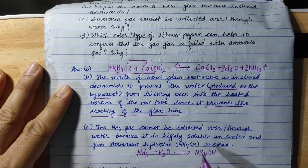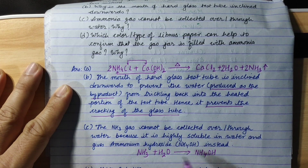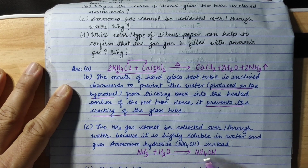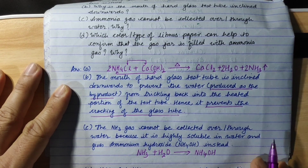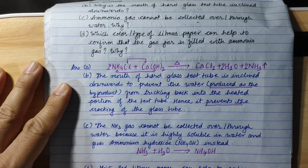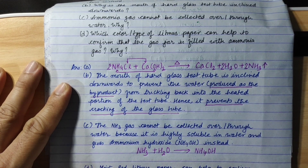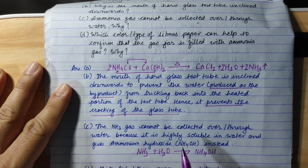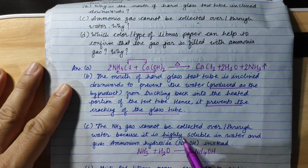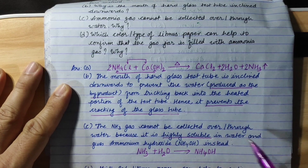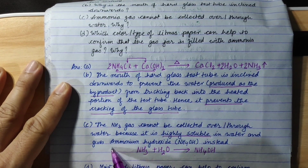Ammonium hydroxide is formed when ammonia dissolves in water. Ammonia gas cannot be collected over or through water because it is highly soluble in water, and gives ammonium hydroxide instead.